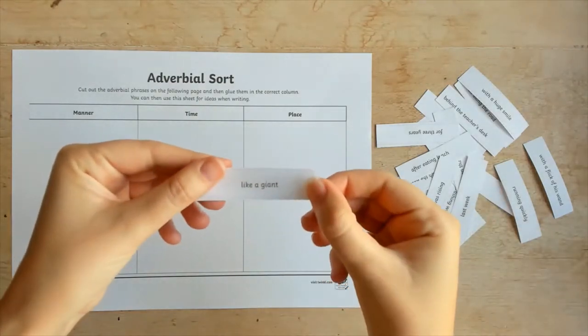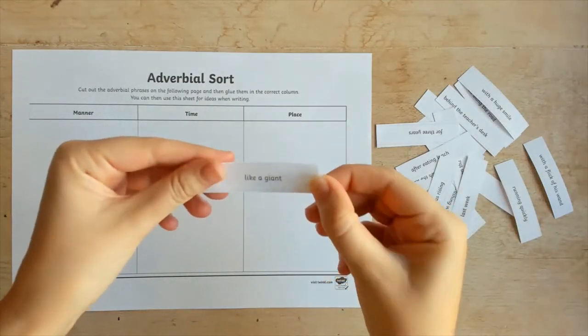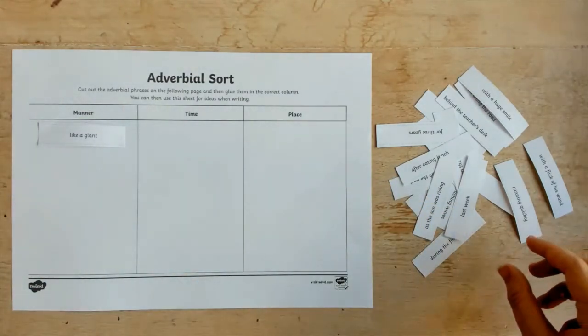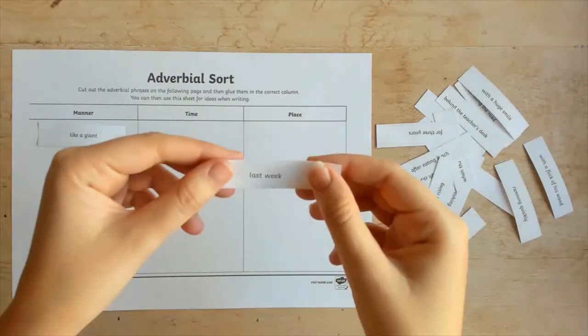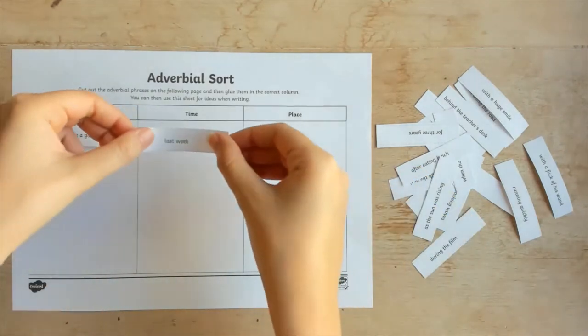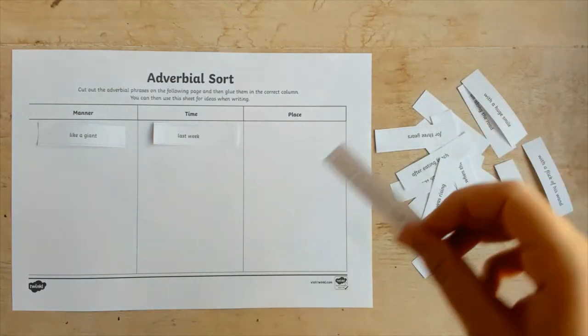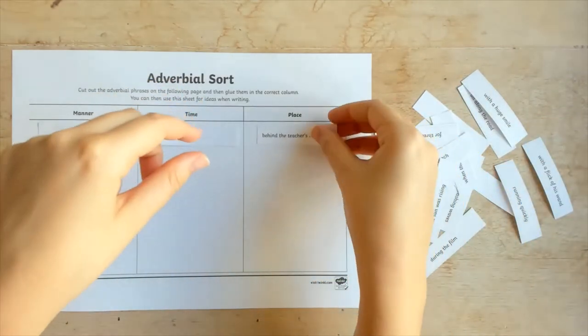If the phrase provides more detail about how the verb is carried out, this is an adverbial phrase of manner. If it gives more detail about when the verb is taking place, this is an adverbial phrase of time. And if it provides extra detail about where the verb has taken place, this is an adverbial phrase of place.